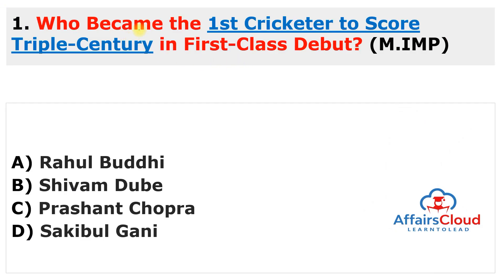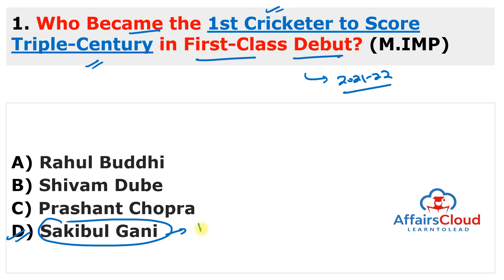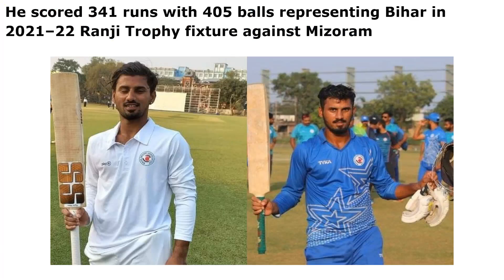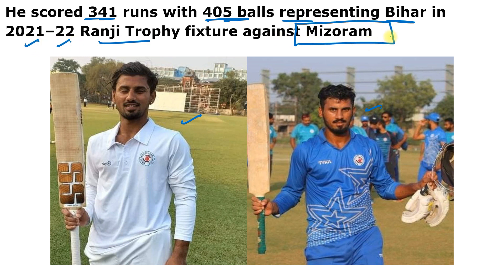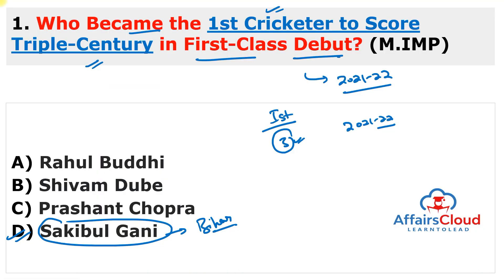The first and most important question: Who became the first cricketer to score a triple century in a first-class debut match? This match was played in the Ranji Trophy 2021-22. The answer is Shaakibul Ghani — option D. He hails from Motihari in Bihar and created a world record by scoring 341 runs off 405 balls, representing Bihar against Mizoram in the Ranji Trophy 2021-22.